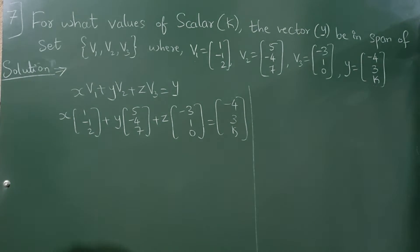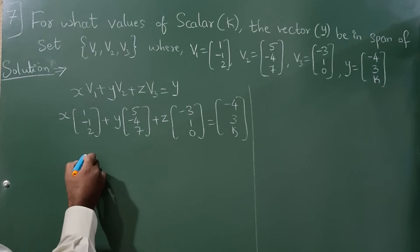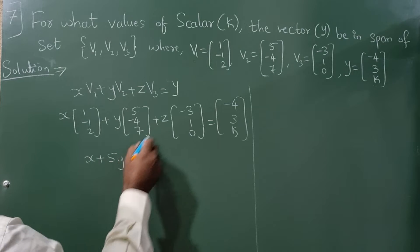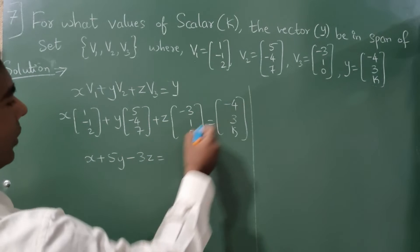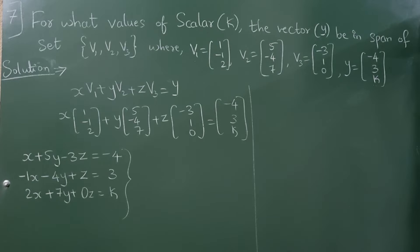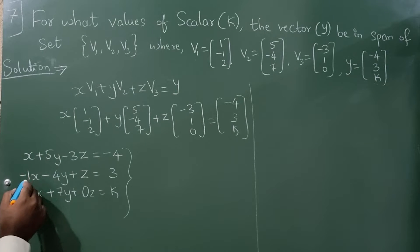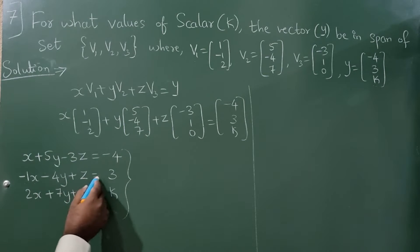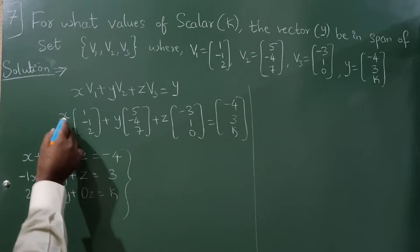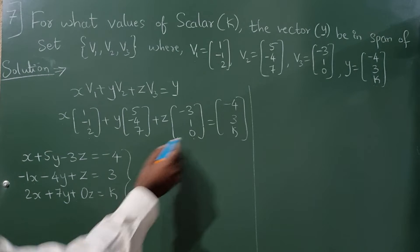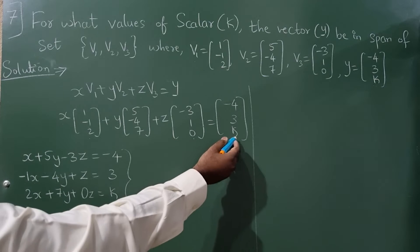Multiply this: x into 1 is x plus y into 5 is 5y minus 3 into z is minus 3z is equal to minus 4. Now x into minus 1, minus x, y into minus 4, minus 4y, z into 1 is z, is equal to 3. X into 2, 2x, y into 7, 7y, z into 0, 0, is equal to k.